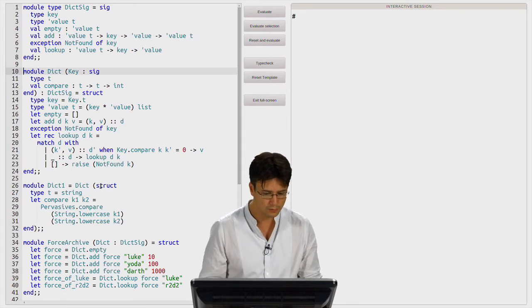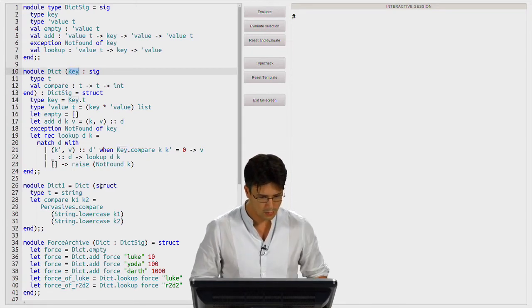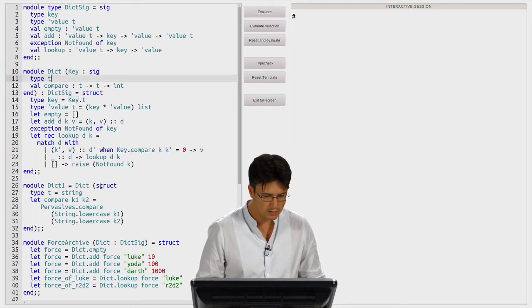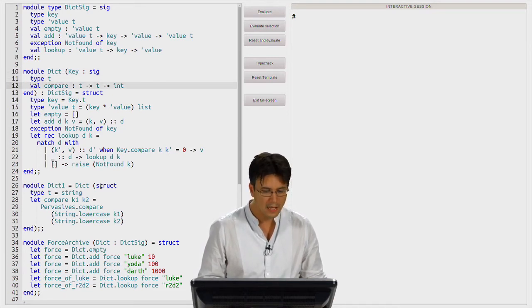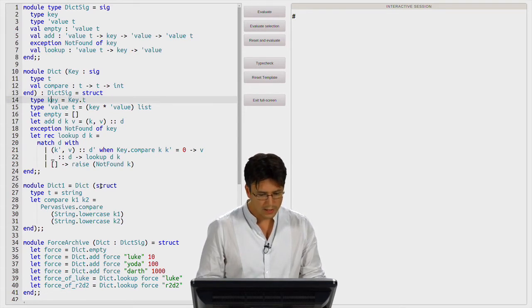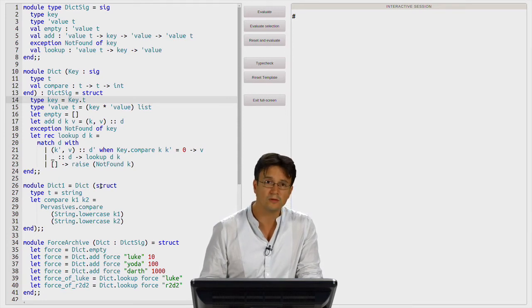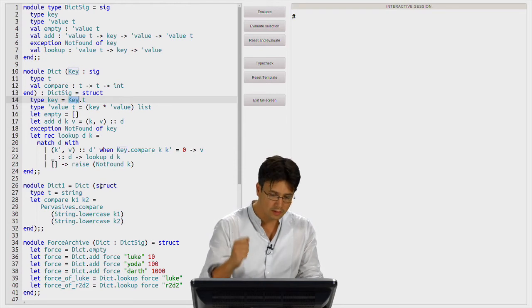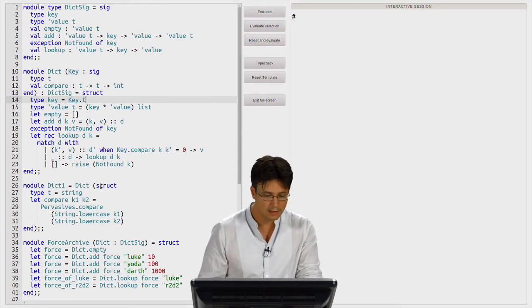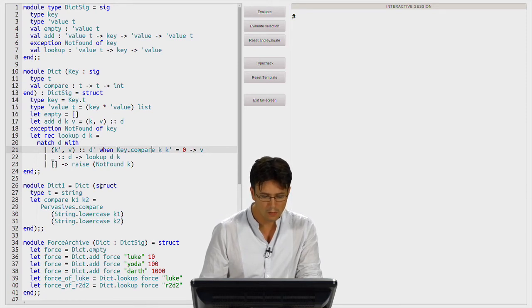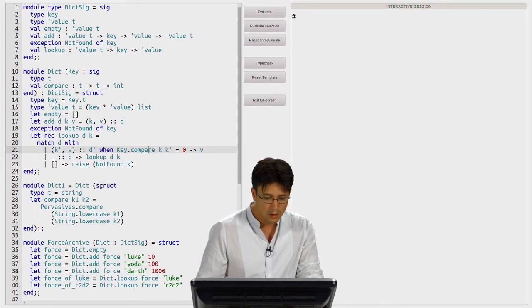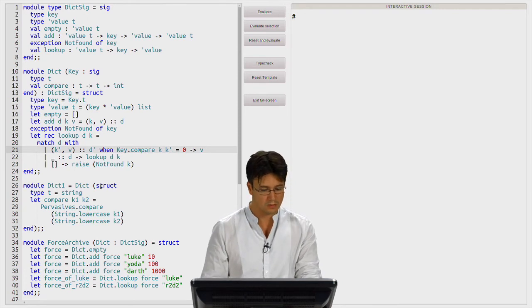Now it is a component of the signature of the module. It is simply a type key that should be given inside the type of the module. Now this type key can be used not only in the definition of function like this, but also in the definition of exception. Now not found can carry the key. How can we now implement a module that fulfills this signature? We have to provide a way to give this type key. We will give it through a module argument. So, dict is now a functor. It is a function from module to module. It takes a module key whose signature is a type T, which is a type for keys, and also a comparison function working on keys.